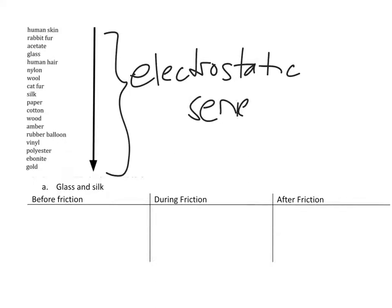With the electrostatic series, you have a list of objects. The items, as you move down the list, get a stronger hold on their negative charges or their electrons. So vinyl will have a stronger hold on its electrons than cotton will. Whenever you're thinking about these different things, you have to think about the strength of hold on electrons.